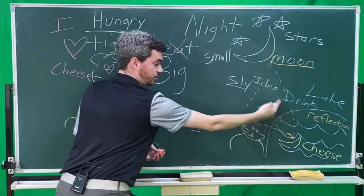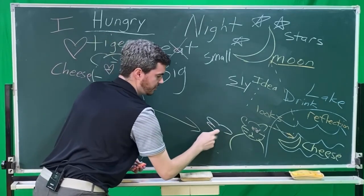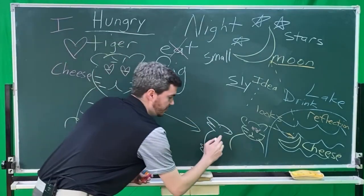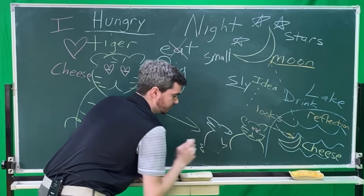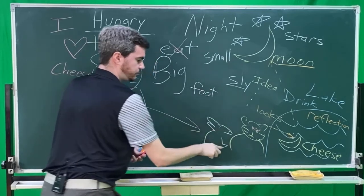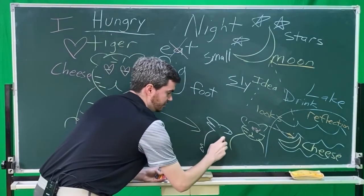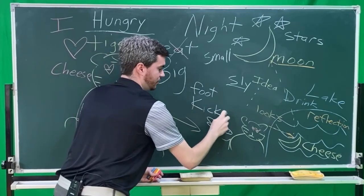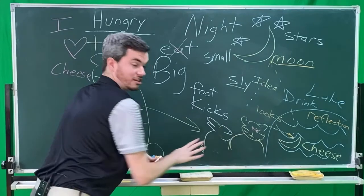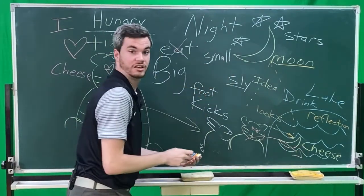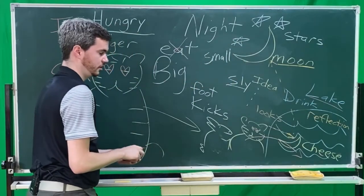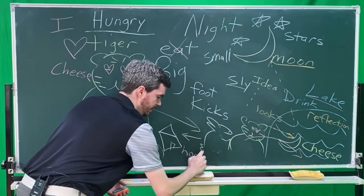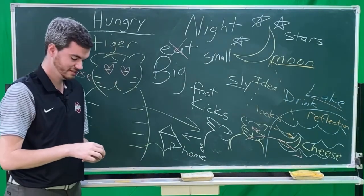Now, the sly rabbit comes behind the tiger. Here is my rabbit. Bushy tail. The rabbit comes up behind the tiger. And the rabbit takes his foot. His foot. And he takes his foot. And the rabbit kicks. The rabbit kicks. Kicks the tiger into the lake. Oh, no. Now, the rabbit can go home. The rabbit is safe. The end.